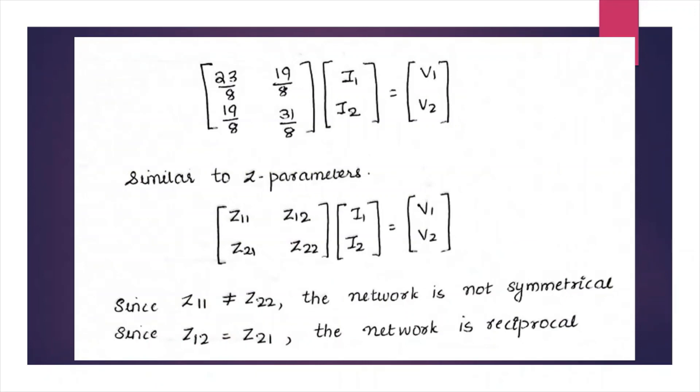So let's write this equation in matrix format and compare with the Z parameters. So here we will get Z11 is not equal to Z22, which means that the network is not symmetrical, and Z12 is equal to Z21, so the network is reciprocal.